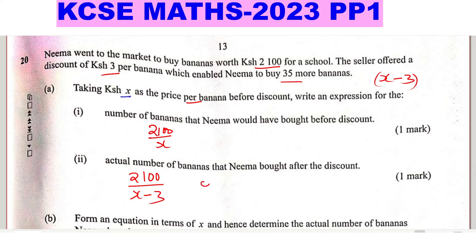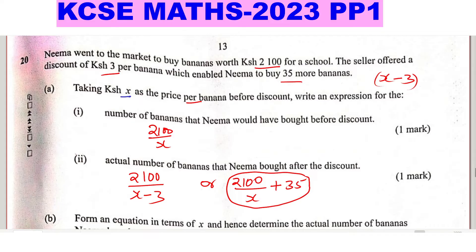Alternatively, since after the discount she was able to buy 35 more bananas, you can express the number of bananas after the discount as (2100 divided by X) plus 35. So you can either write it as 2100 divided by (X minus 3), or equivalently as 2100 divided by X plus 35.